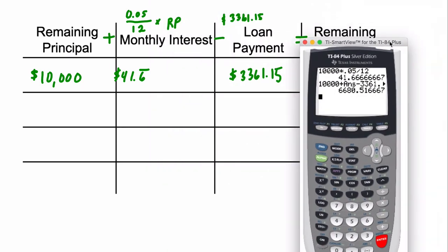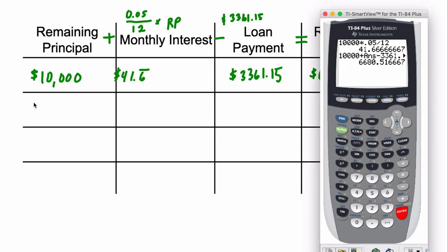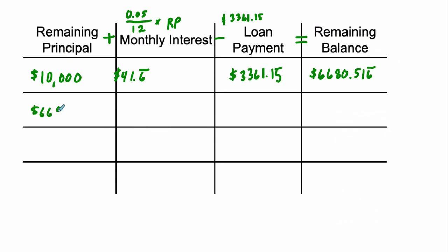Now that's our remaining balance. And one big thing to realize is that if you take $10,000 and you subtract 3361.15, you don't get this number here because the amount you pay only is applied after the interest has been added. So the amount you're paying, you're paying off some interest as well as the principal balance. So if you pay them $500, it's not going to go down by 500. You have to pay off the $41 of interest first.